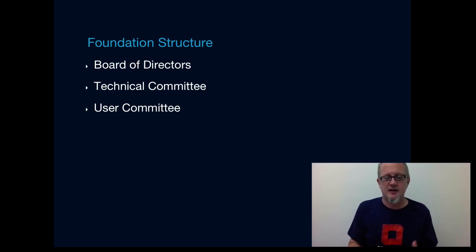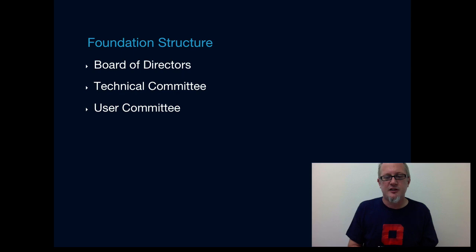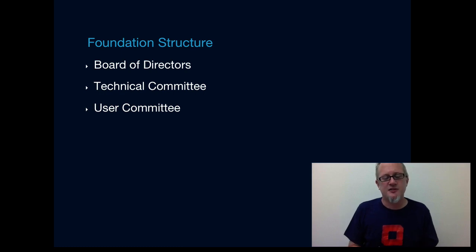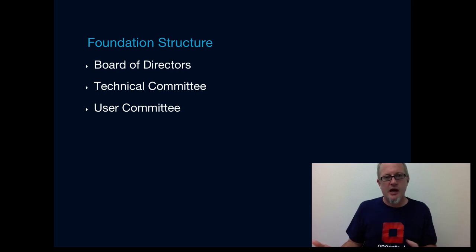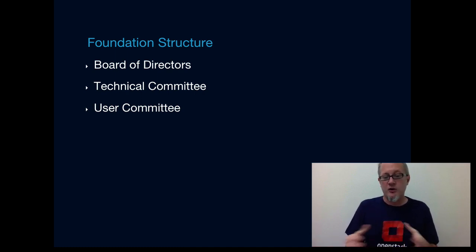Tim Bell from CERN is leading the user committee. If you haven't followed what's going on at CERN, they're actually finding and creating new forms of matter — and according to Tim, they're still looking for 96% of the universe in terms of matter. Some of the stuff they're doing with OpenStack is really fantastic. Just seeing the impact something like OpenStack can have on the way we understand the universe — I never thought it could possibly be that impactful when we kicked it off three years ago. The whole idea of the user committee is: if we don't listen to the users, we're in trouble. We want to make sure users have as strong a voice as possible.